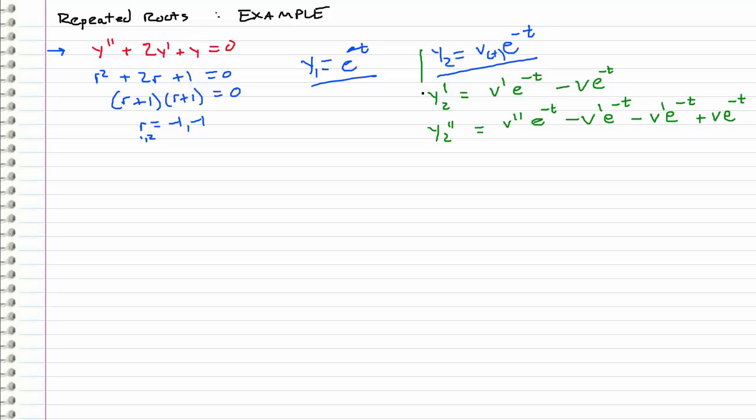Okay, so these are our expressions. Let's go ahead and plug those back into the differential equation. So when we plug it back in, and I'm going to factor out the e to the negative t's right away, we get e to the negative t times v double prime, this guy right here, minus 2 v prime plus v. And then we have a plus 2, I'm going to factor out that e to the negative t as well.